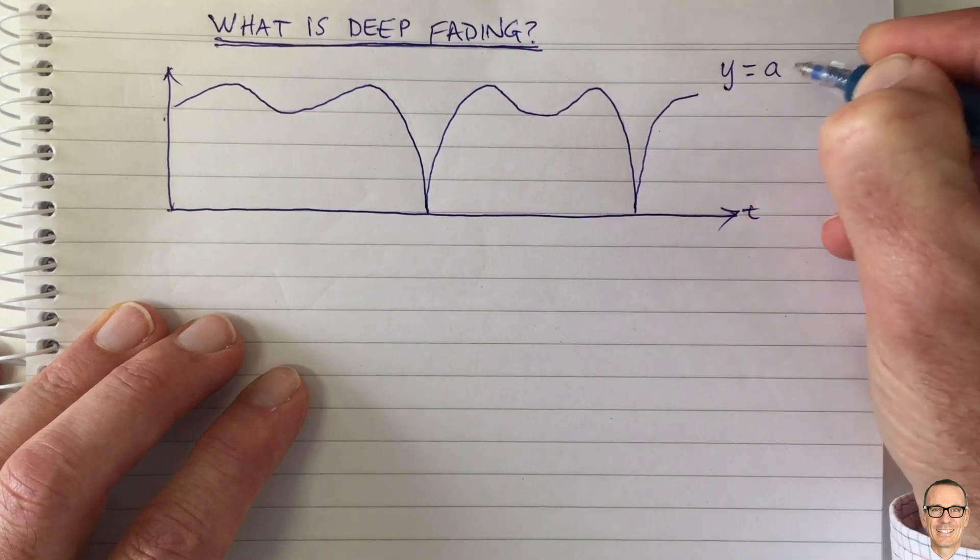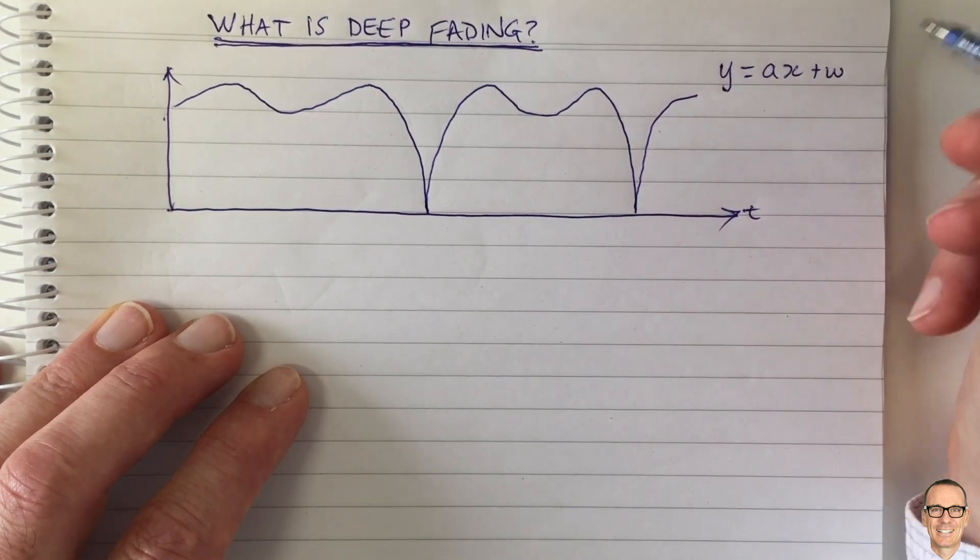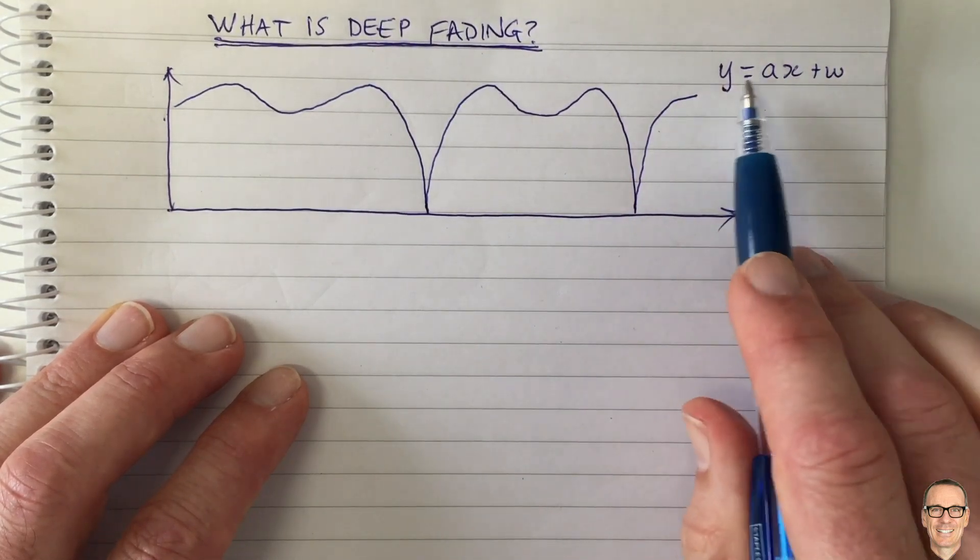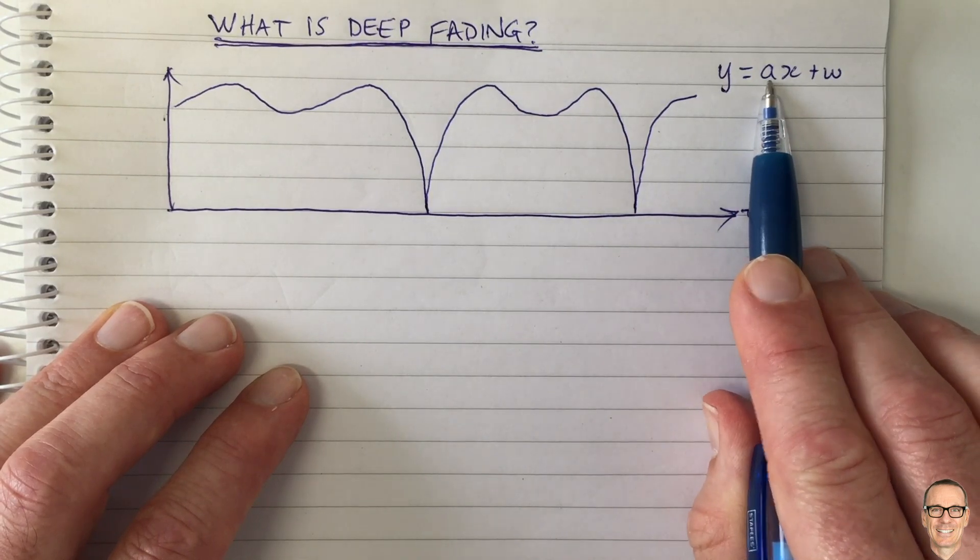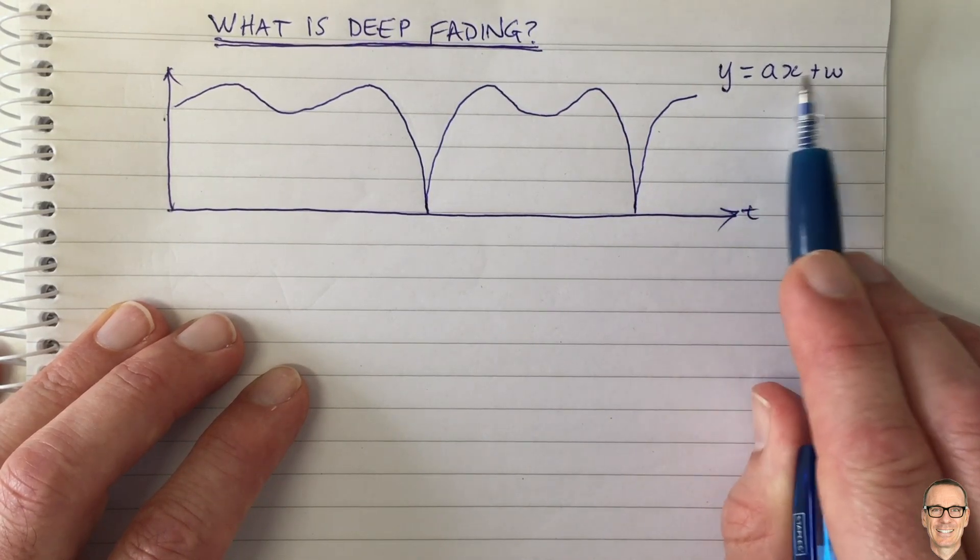And I'm going to write the equation here for a narrow band fading channel, where we have a channel gain A, which our symbol gets multiplied by, plus noise.